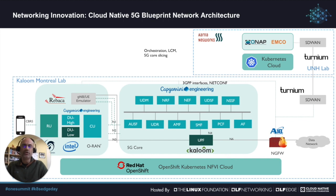On the top right you see the orchestration components which were ONAP and EMCO from Linux Foundation Networking. These components were running in their own Kubernetes cloud in University of New Hampshire. They were connected to a second lab in Montreal over a WAN link, and the SD-WAN components came from a company called Ternium.